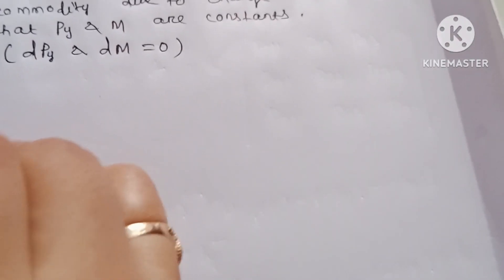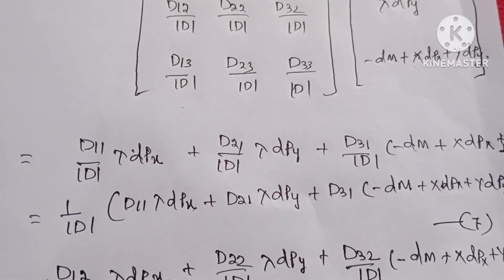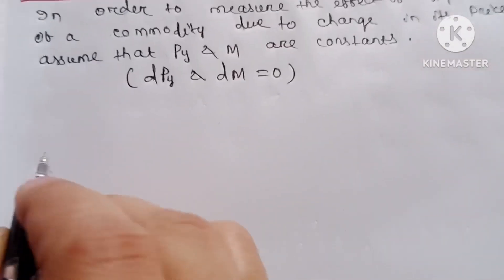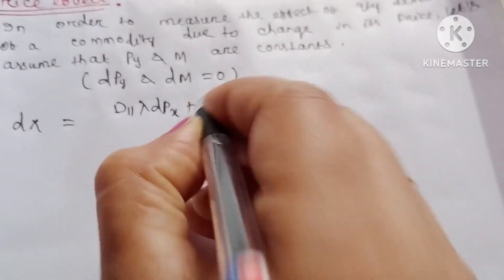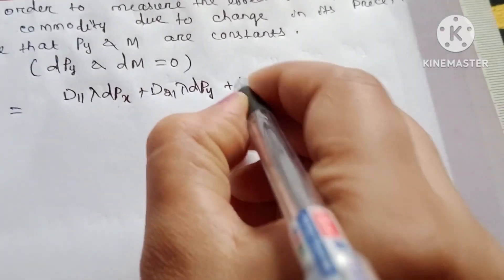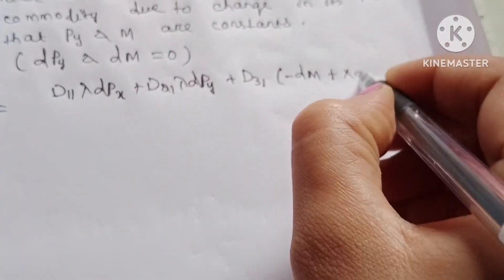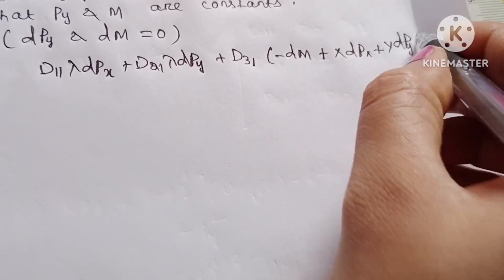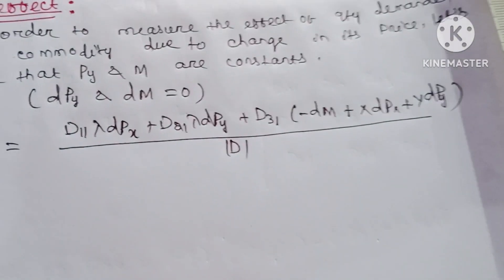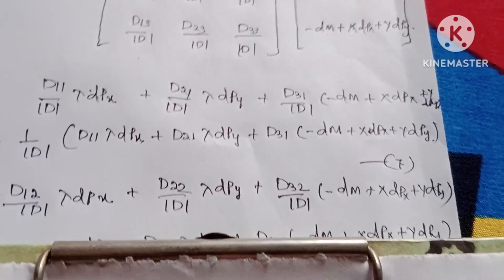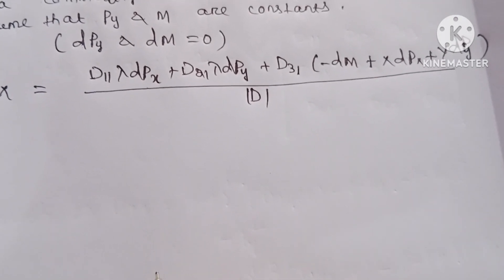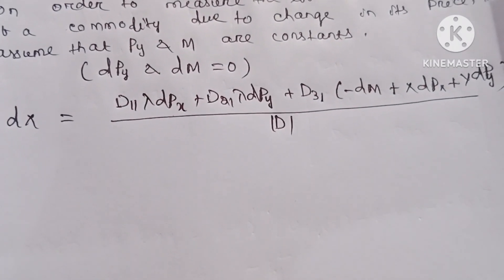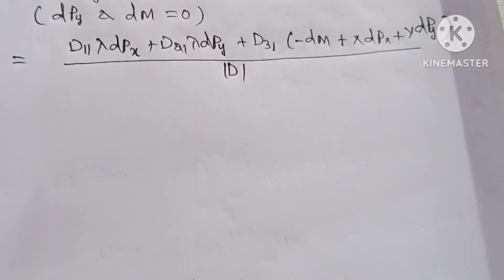From equation number 7, we have: dx equals d11·λ·dpx plus d21·λ·dpy plus d31 multiplied by minus dm plus x·dpx plus y·dpy, all divided by the value of the determinant. So now we want to calculate dx/dpx, that is the partial derivative of x with respect to px, keeping money income and relative price constant.